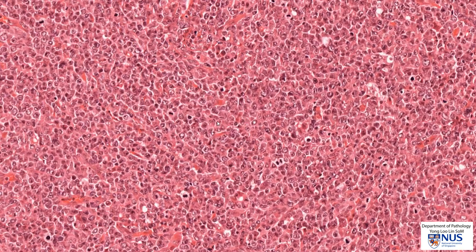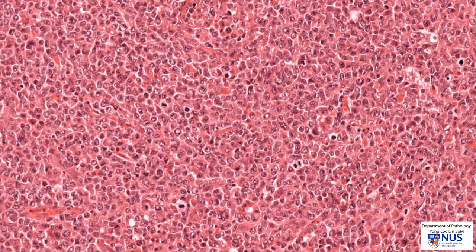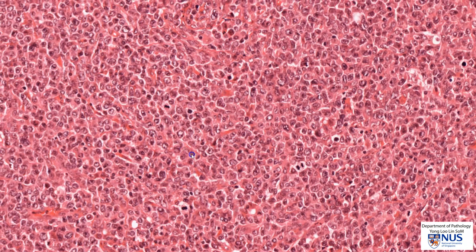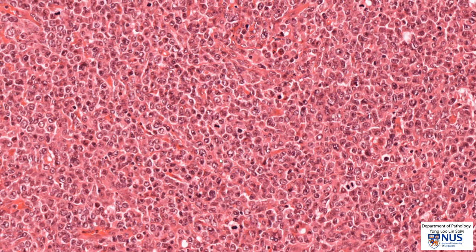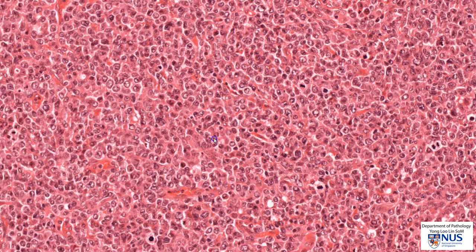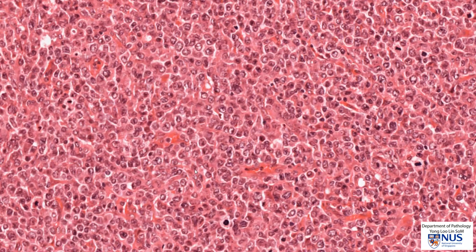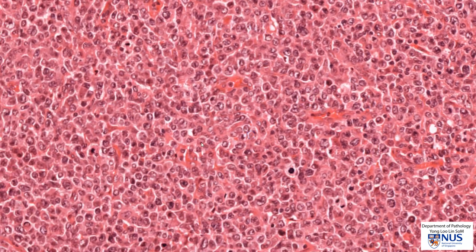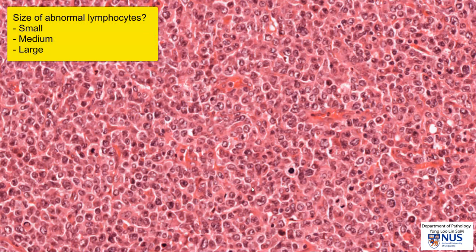Let's take a higher magnification look. We can see that the proliferation is composed of lymphocytes. Many of the nuclei are very pale — quite translucent with open chromatin — and some of them have slightly irregular nuclear outlines. For example, this cell is a little bit irregular, and some of the cells also have fairly prominent nucleoli. Looking at this cell here, we can see a prominent nucleolus. We're now going to figure out the size of these abnormal lymphoid cells.